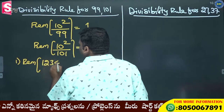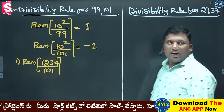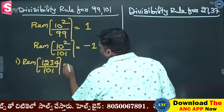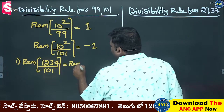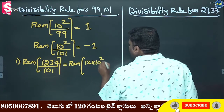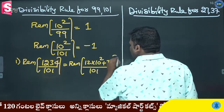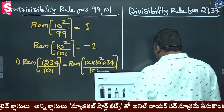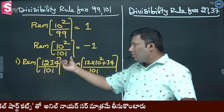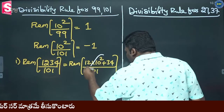1234 divided by 101. Taking groups: 18 into 10 square — tell me what that equals. 181 plus thirty. 181. 10 square divided by 101 gives minus 1, so 34 minus 12 equals 22.